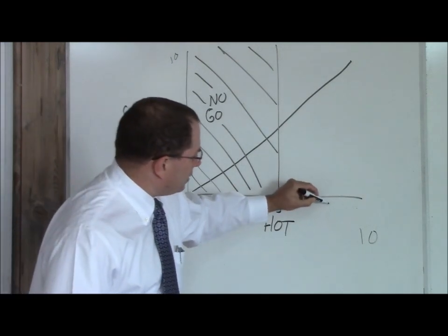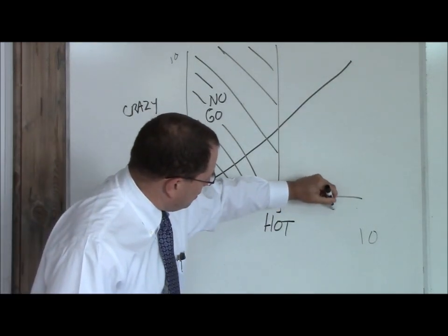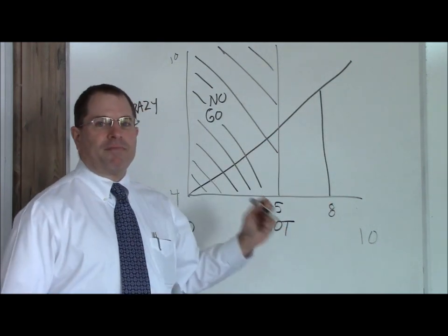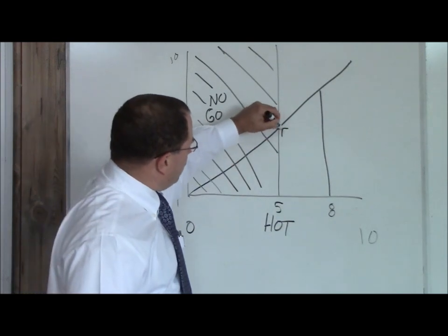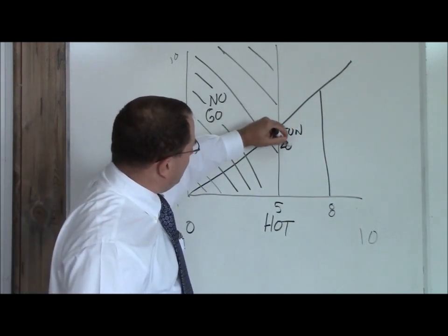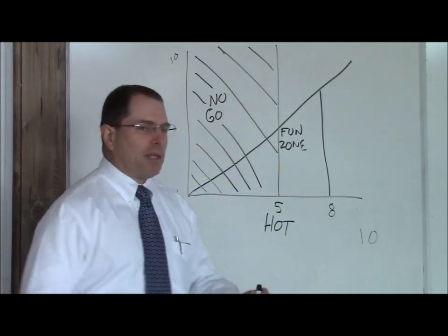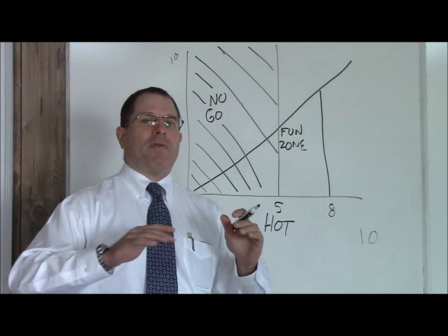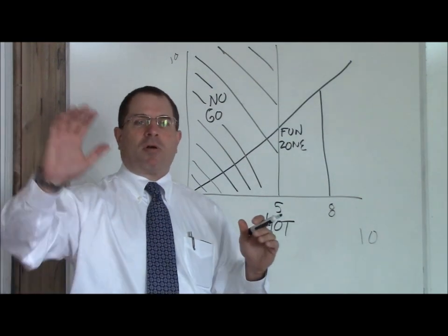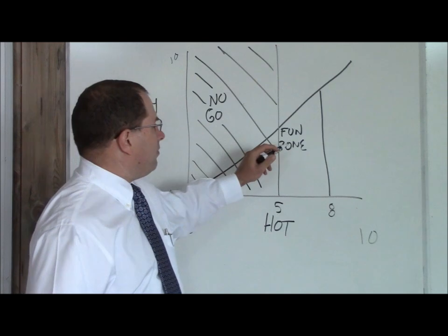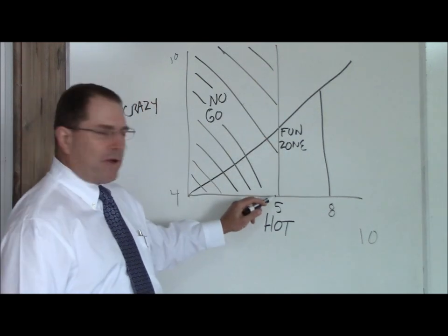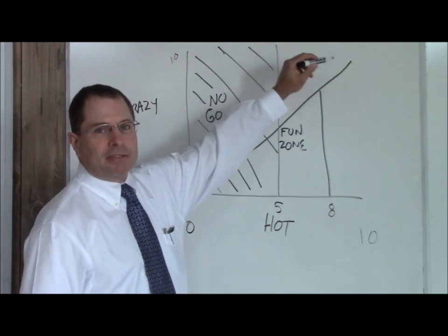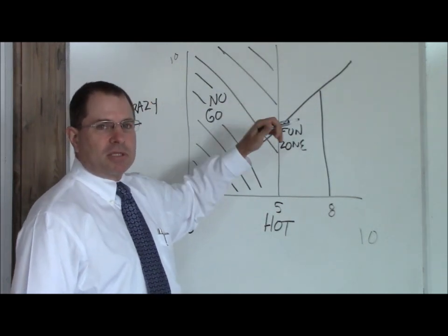Above a 5 and to about an 8 and below the crazy line, this is your fun zone. You can hang out here and meet these girls and spend time with them. But keep in mind when you're in the fun zone, you want to move out of the fun zone to a more permanent location. So that's the fun zone above a 5 hot, below an 8 hot, and below the crazy line. This means these are most of the time not crazy.